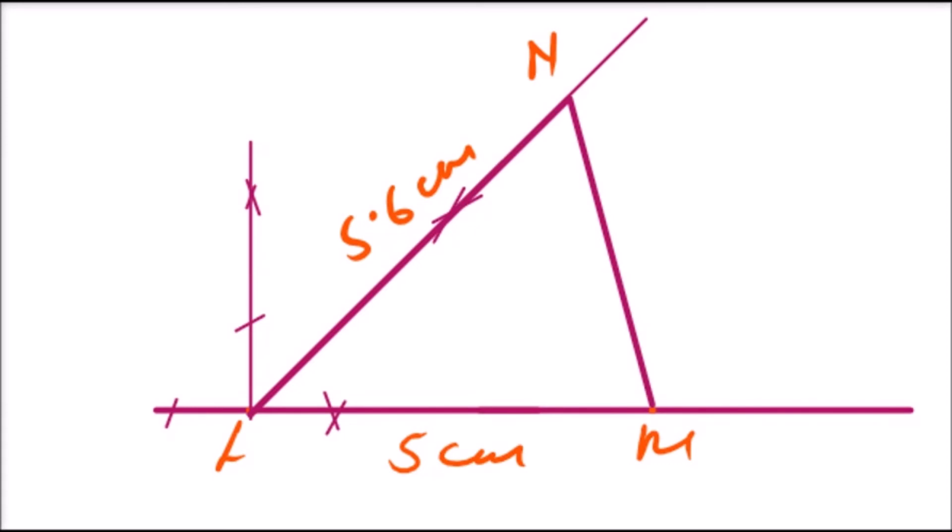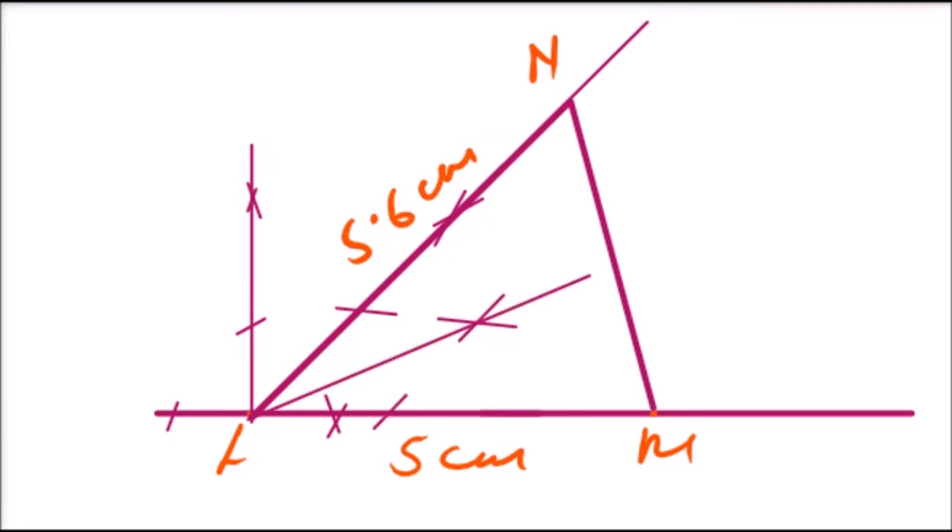Once you do that, then you need, for you to get the circle touching all the three sides, you need to bisect the angle. So you can bisect N, L, M, so you bisect that angle by making 2 marks and 2 arcs, like you can see. Then you draw a line.